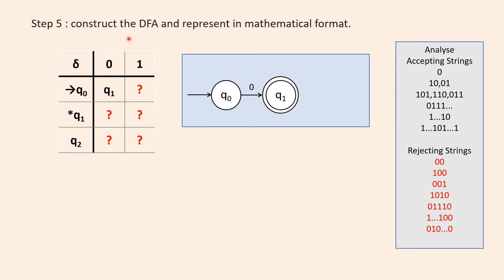In step five, let us complete the construction of the DFA. If there is only one zero the string has to be accepted. If I have n number of ones and then one zero, the string should be accepted. So I am looping n number of ones in q-naught, and when I encounter one zero it goes to the final state q1. Next, if I have n number of ones then one zero and again n number of ones, that is also in the final state because the entire string has only one zero. So I am looping ones in q1 itself.